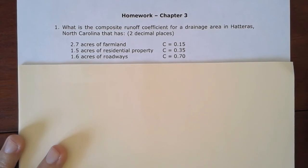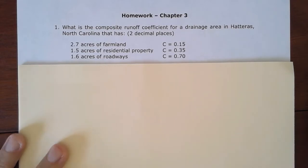Let's start off with Chapter 3 Hydraulics Homework, Problem 1. We're looking for the runoff coefficient for a drainage area in Hatteras, North Carolina. It provides all the information here — how many acres of farmland and what the coefficient is for each.